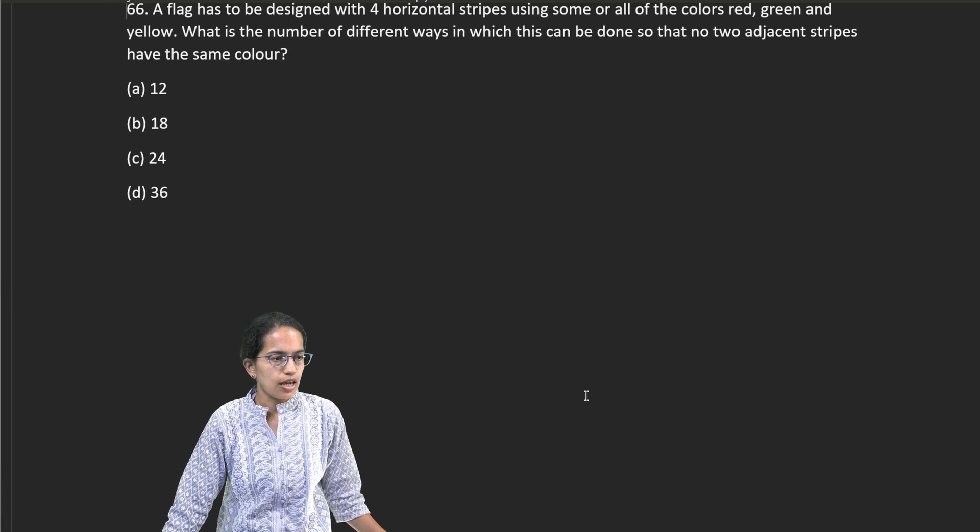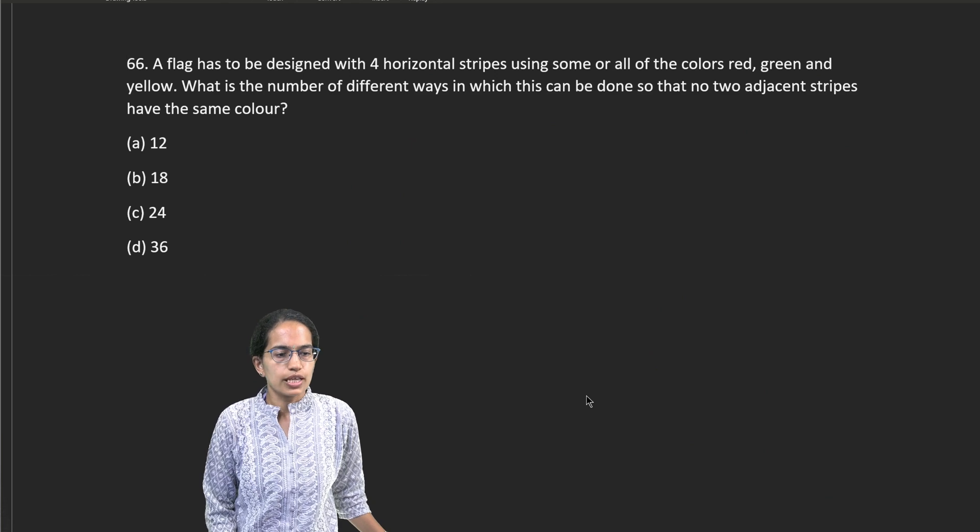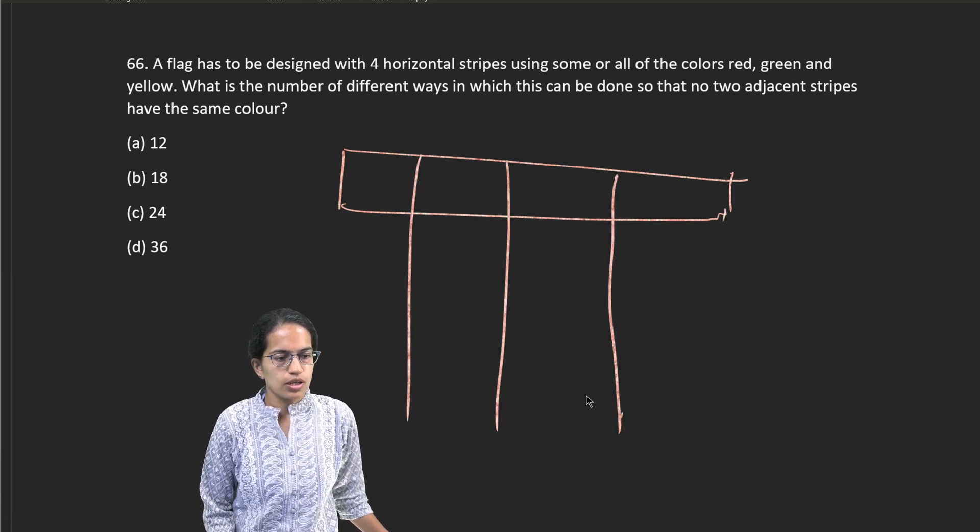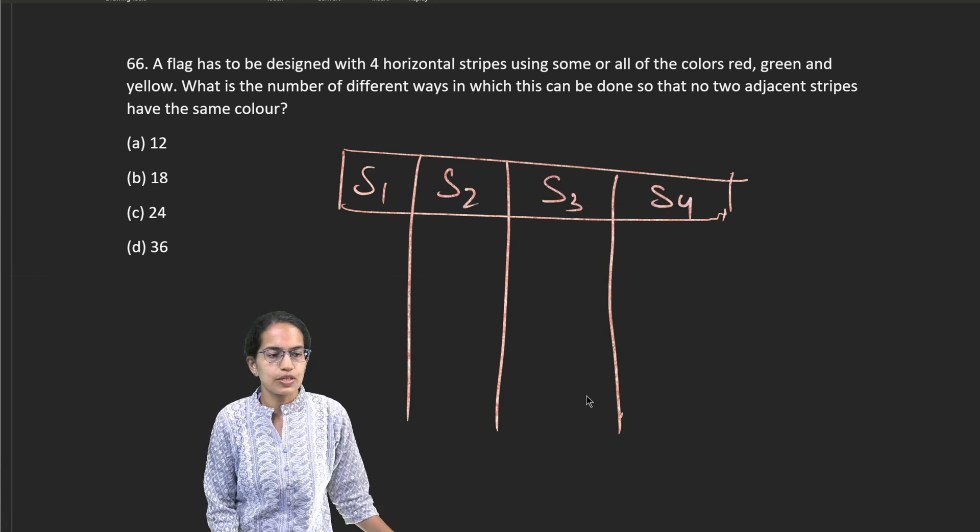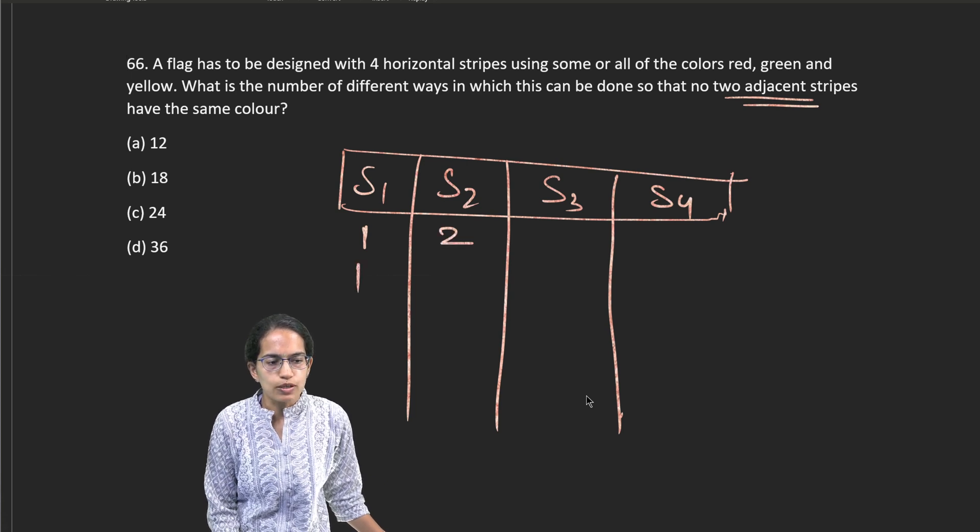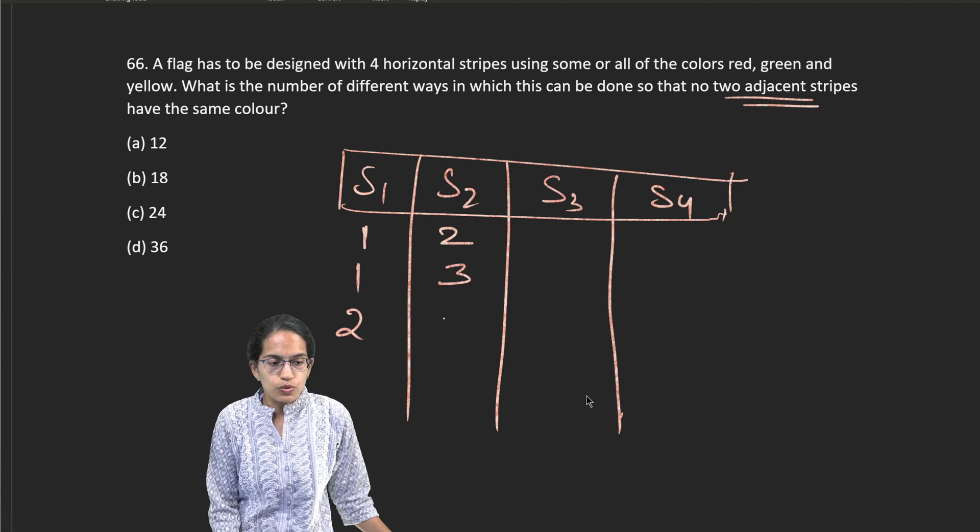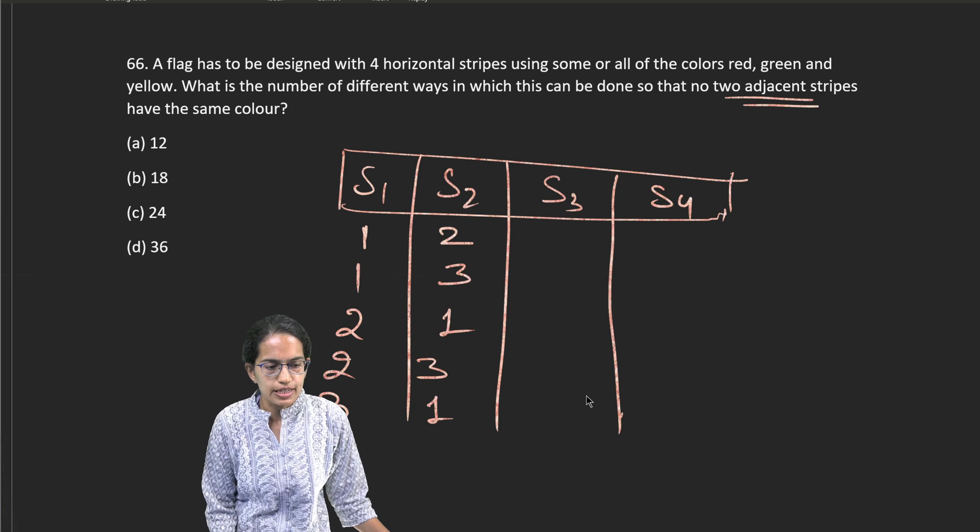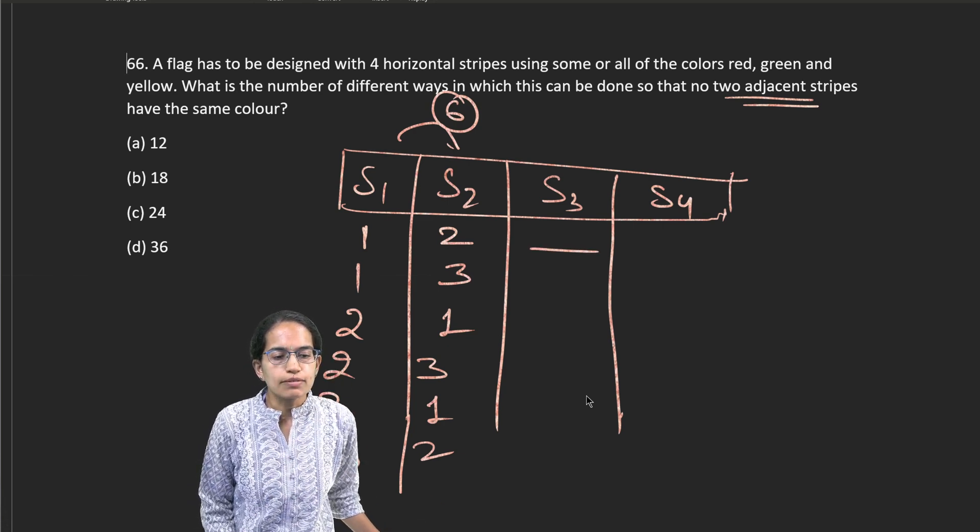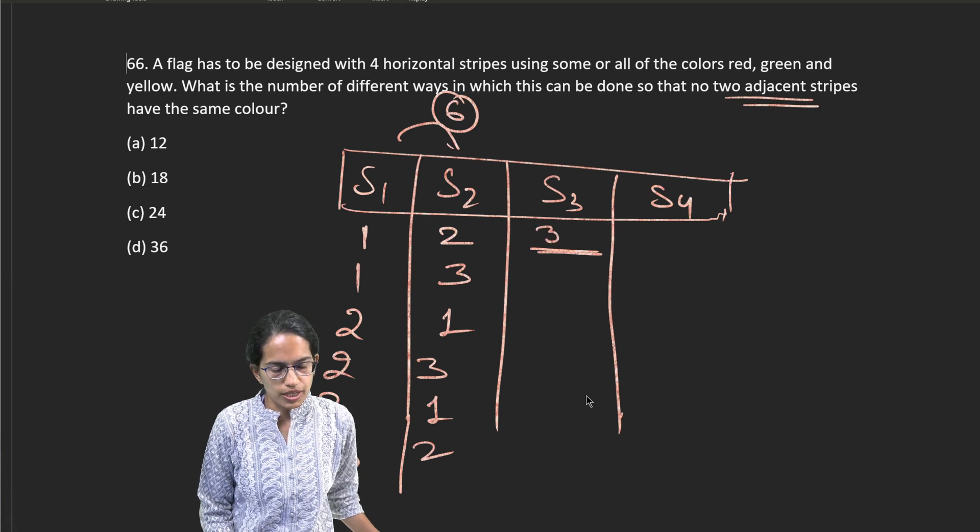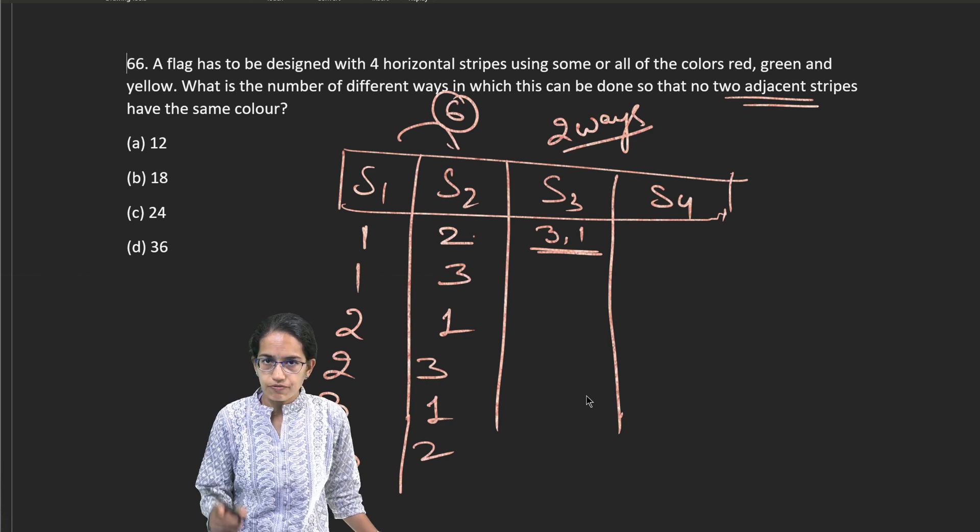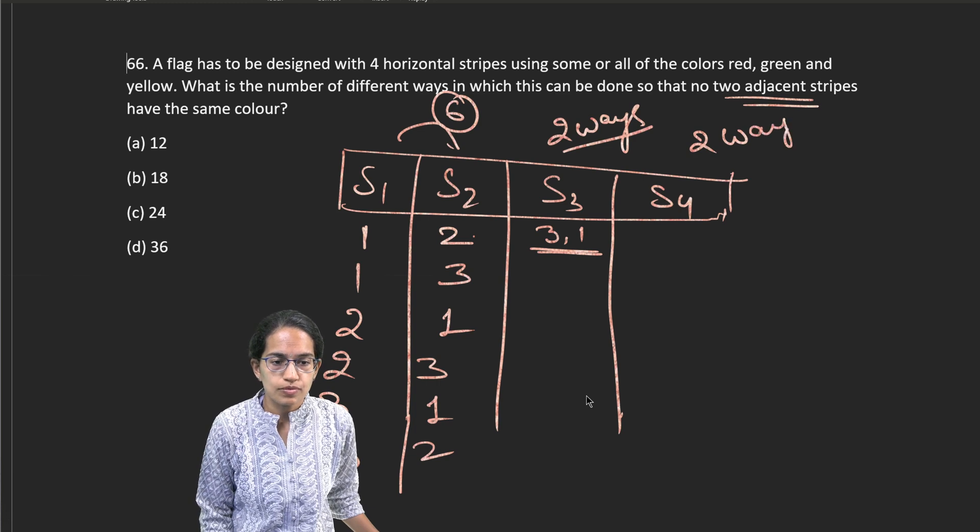The next question is a very interesting problem. Here understand the logic behind it. So there are four different ways in which you can take the number. This is stripe one, stripe two, stripe three, stripe four. Understand this very carefully. It says no two adjacent can have the same color. So if I take one color here I can have color two here. I take one color here I can have color three here. I take color two I can have one here. I take two I can have three here. I take three I can have one here. I take three I can have two here. So how many combinations for S1 and S2 I have? Six ways in which I can have arrangement for S1 and S2.